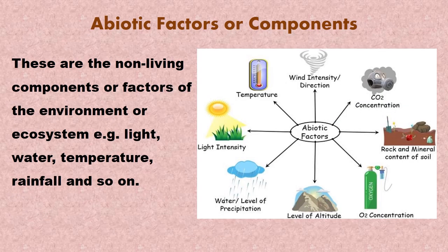Moving along to the abiotic factors — these are the non-living components of the environment or ecosystem. As you can see in this slide, we have temperature, which is the measure of heat; light intensity, which is important because plants use light to produce their own food; water, which is essential because without it living organisms would die; and oxygen, which all living organisms require for respiration — a lack of oxygen will also cause living things to die.